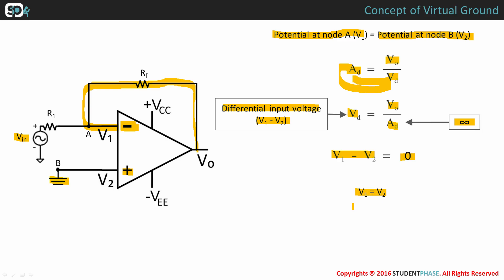In this circuit, V2 is at ground potential, which is nothing but zero. Hence we can say that V1 equals V2 equals zero.